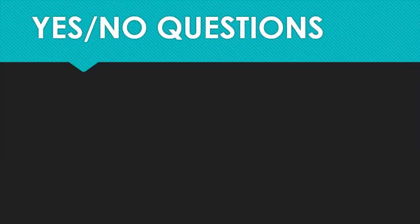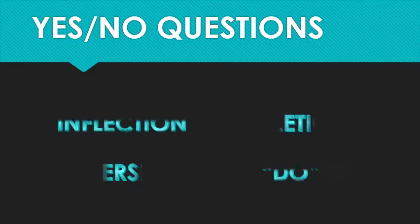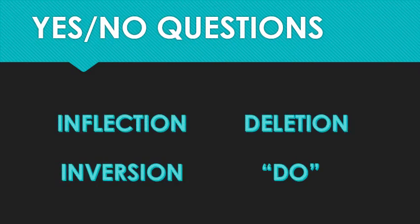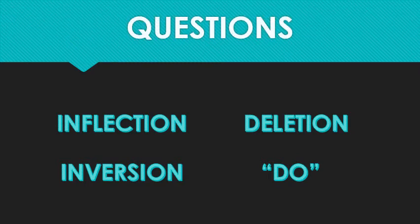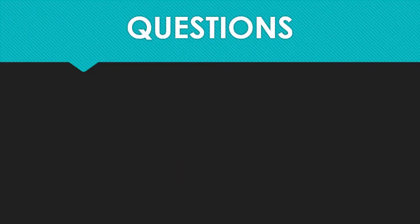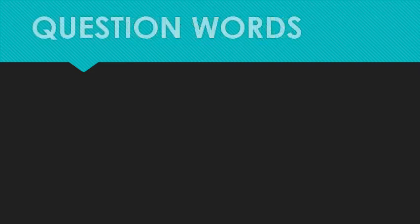Last week we talked about four different types of yes-no questions: inflection, inversion, deletion, and grammatical do. The good news is that these are the same structures we're going to use with other types of questions as well. The ones that we're talking about today depend on the use of one or more question words.